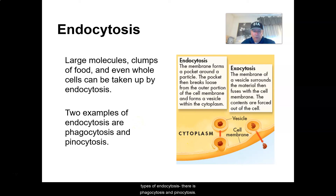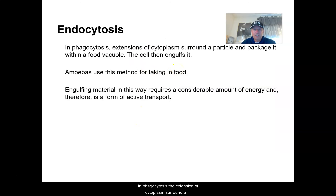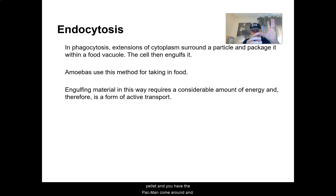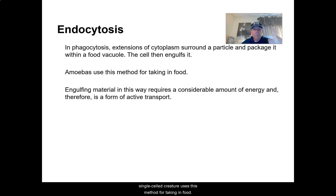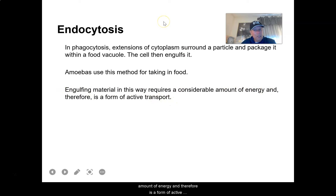There are two types of endocytosis: phagocytosis and pinocytosis. In phagocytosis, the extension of the cytoplasm surrounds a particle and packages it in a food vacuole — the cell engulfs it. For example, it's like Pac-Man: the Pac-Man comes around and just engulfs the little pellet. Amoebas, a single-cell creature, use this method for taking in food. Engulfing material requires a considerable amount of energy and is therefore a form of active transport.